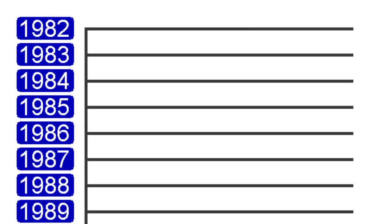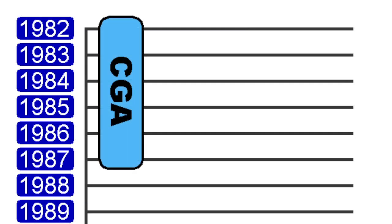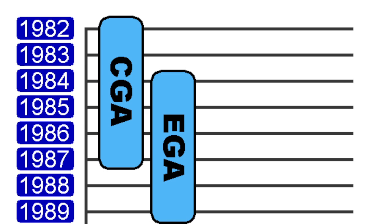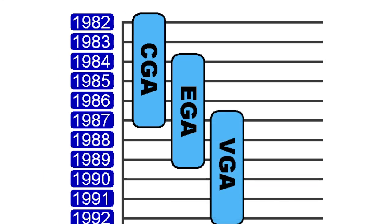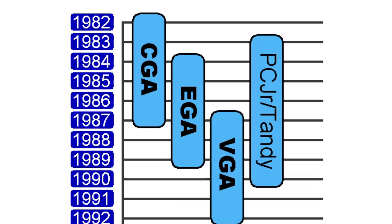CGA was the first graphics card made for the IBM PC. It came out in 1981 and was produced in various forms to approximately 1987. EGA graphics came out about 3 years later and then VGA a few years after that. There was also the PCjr slash Tandy 1000 graphics that competed with all of these in the market.